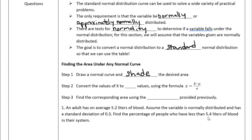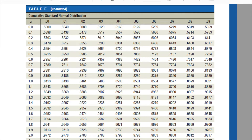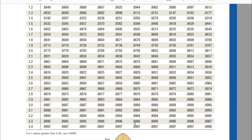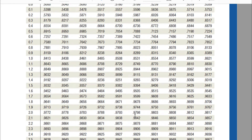The first step is to draw the normal curve and shade the desired area. Then convert the x value given in the word problem to a z-score using the formula z equals x minus the population mean, divided by the population standard deviation. Once you get the z-score, find the corresponding area using the z-table.